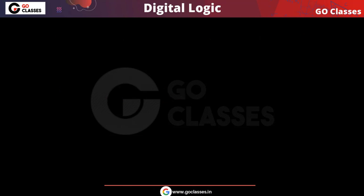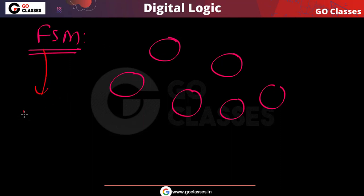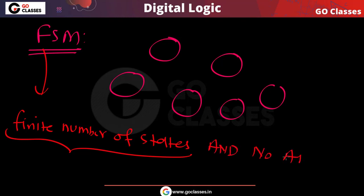The definition of finite state machine: this is any machine in which you have a finite number of states. That is the only memory available to you - finite number of states and no additional memory.